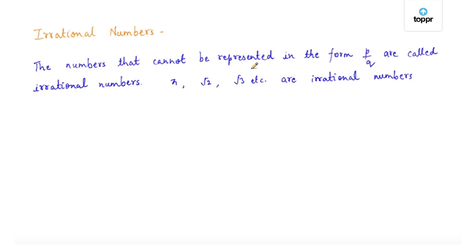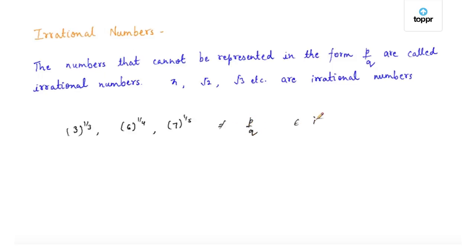The numbers that cannot be represented in the form p by q are called irrational numbers. As discussed, pi, root 2, root 3 etc. are all irrational numbers. Let's think of more examples: 3 raised to the power 1 by 3, 6 raised to the power 1 by 4, 7 raised to the power 1 by 5, and all those numbers which cannot be simplified as p by q are irrational numbers. Since there can be infinitely many numbers with fractional power, there are infinitely many irrational numbers.